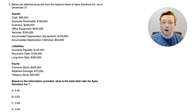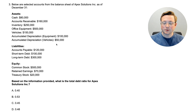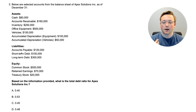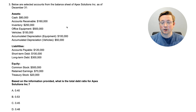Here we are at question three — a bigger question. But before we do anything, always read the last part: based on the information provided, what is the total debt ratio for Apex Solutions, Inc.? This is a ratio we haven't talked about yet — we've only talked about the debt-to-equity ratio. The question provides all the assets, all the liabilities, and all the equity. If you know how to do this, pause the video and work through it. If not, we're going to dive straight into the answer.